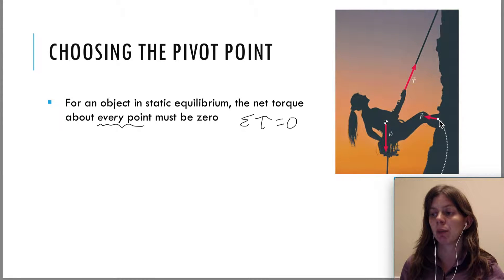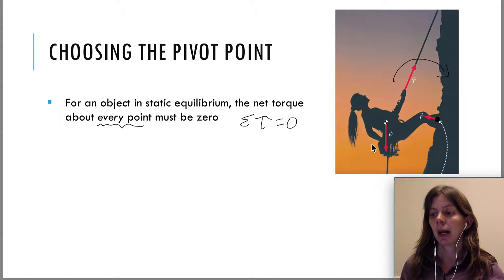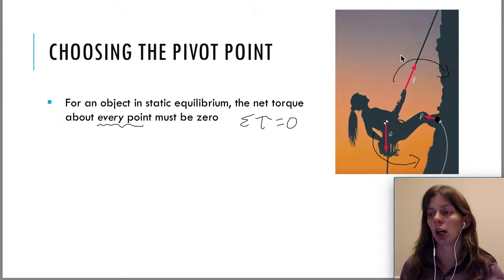So if we pick the pivot point to be where the wall is, then that would be the pivot point. That means that the tension would produce a clockwise torque, and the weight would produce a counterclockwise torque. The way that you know the direction of the torque is you fix this point, put your thumb on it, pull upward and see which way she rotates — you'll see that she'll rotate clockwise.